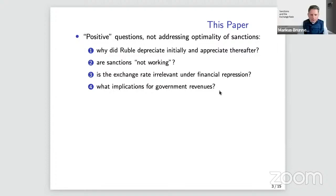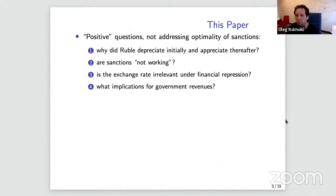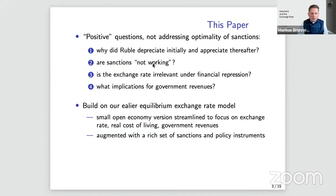Another important question: does the exchange rate have a relationship with government revenues? Do sanctions and exchange rate movements have consequences for budget revenues and the government's ability to finance the war and domestic expenditure? Also, a question was raised: is there a black market in Moscow for swapping rubles for dollars? Initially there was some emergence of alternative exchange rates, but now there's essentially no secondary market — everything converged to the official exchange rate.